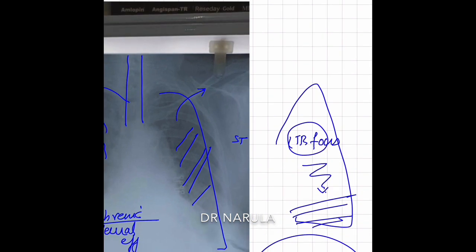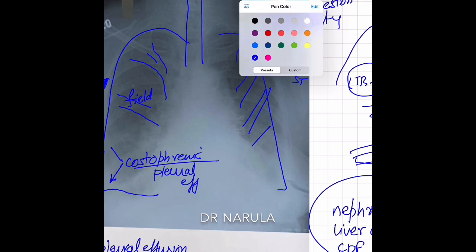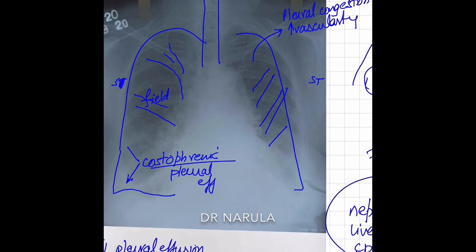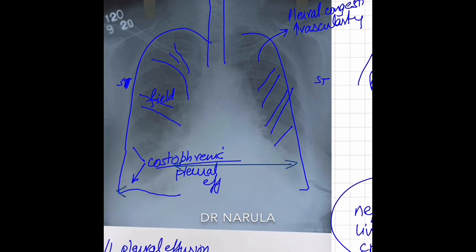This means there is increased vascularity — increased pulmonary congestion visible on the X-ray. We gather multiple clues from the X-ray to get a diagnosis. Now looking at the heart: the maximum length of the heart compared to the maximum length of the thorax — the cardiothoracic ratio — is more than 0.5, which means there is cardiomegaly.